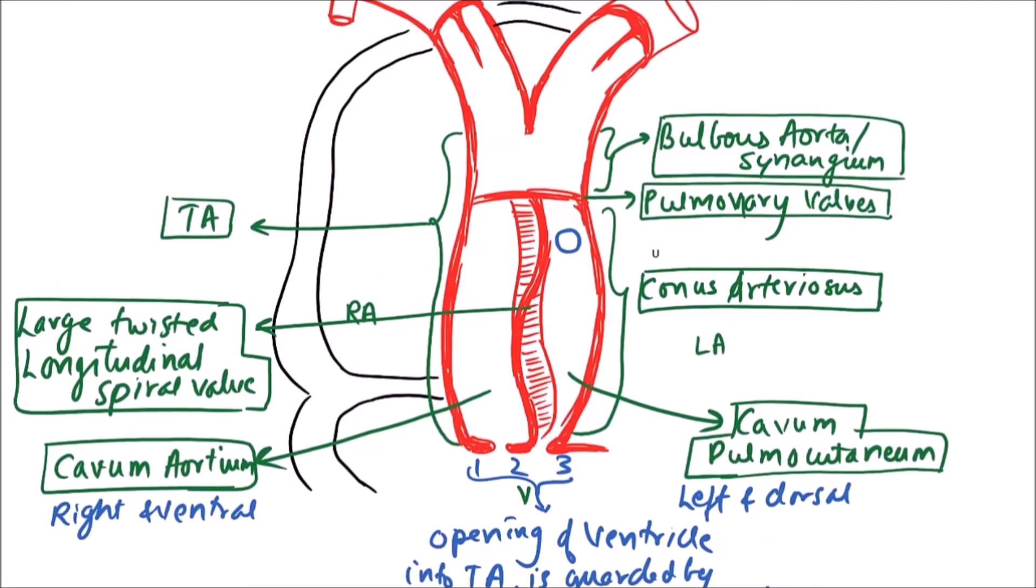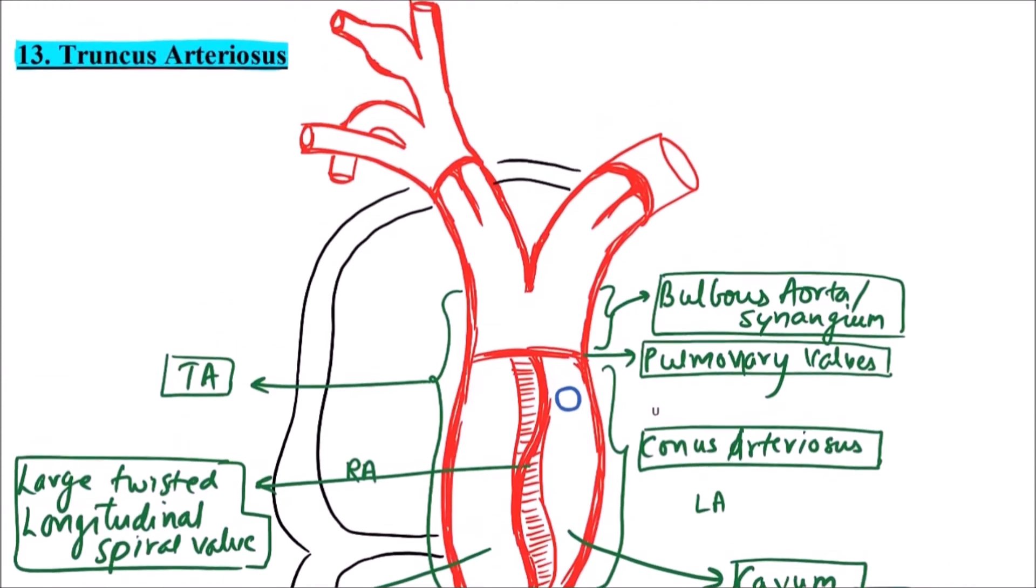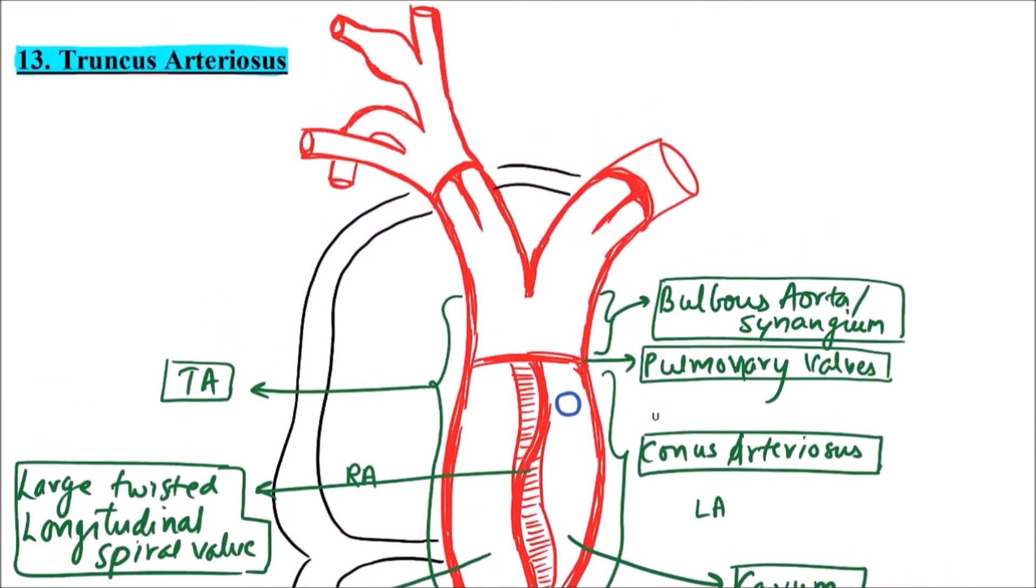Now this bulbous aorta or synangeum is divided into two major aorta which are termed as aortic trunks. So these are right and left aortic trunks.